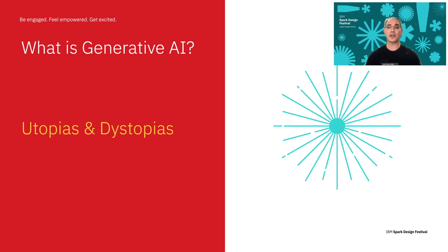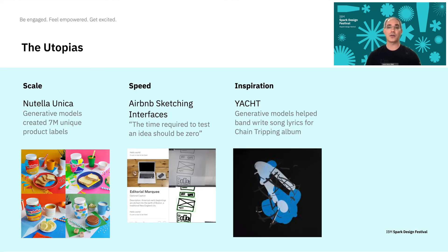This brings me to the last part of this talk, where I'll briefly discuss some of the utopias and dystopias that can be created because of generative AI. These are the utopias, which are really some of the main benefits provided by generative models — things like scale and speed and inspiration.